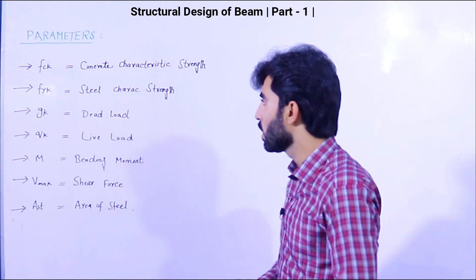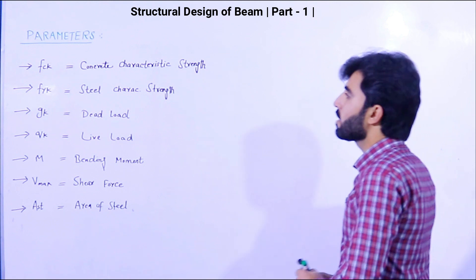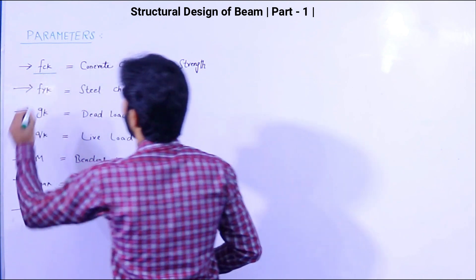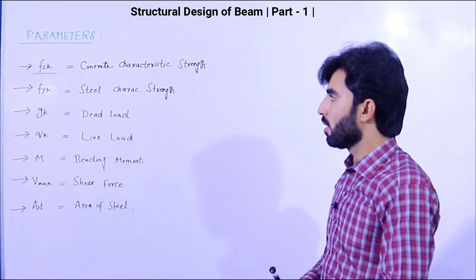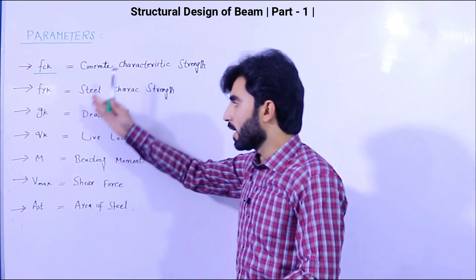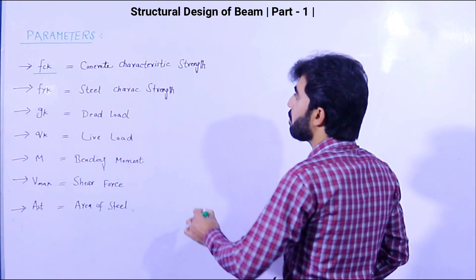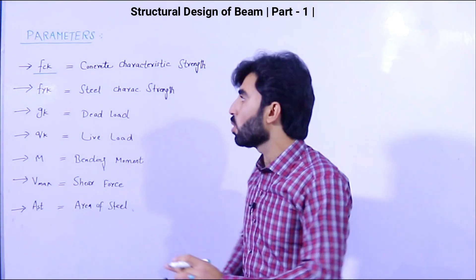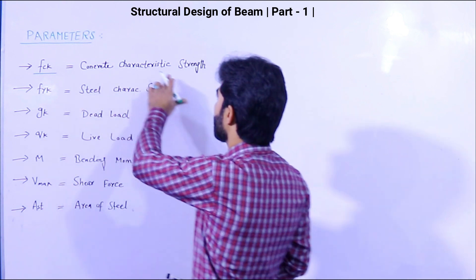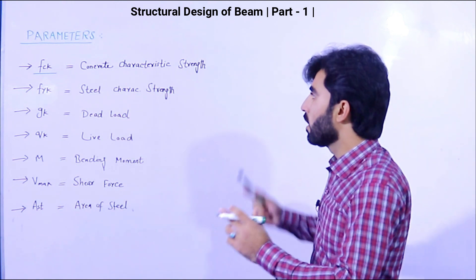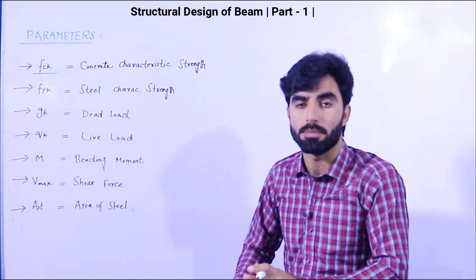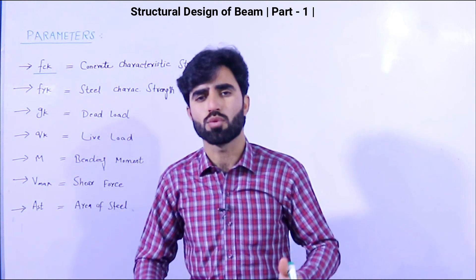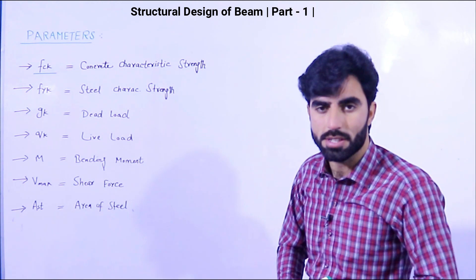If this video is helpful for you, please like it. This is Part 1. We are using fck in the structural design of beam. We have different formulas for different parameters. fck means concrete characteristic strength. We will use the characteristic strength of concrete during beam design. As you know, we have M5, M7.5, M15, M20, M25 — from there you can get the characteristic strength of concrete.